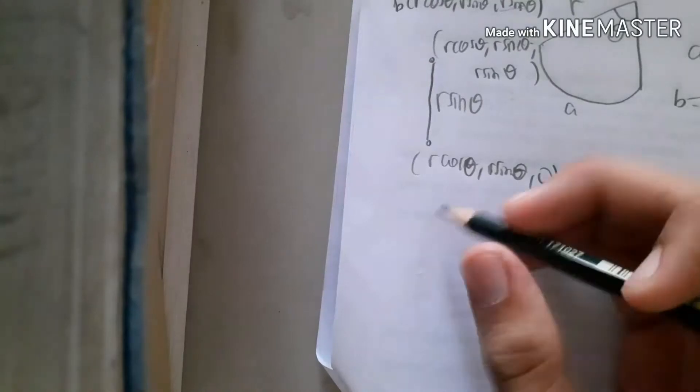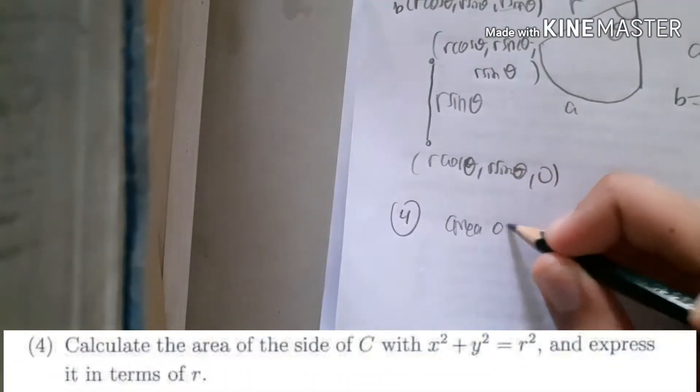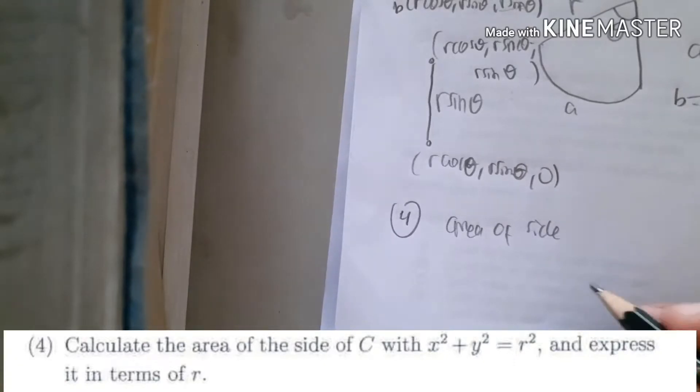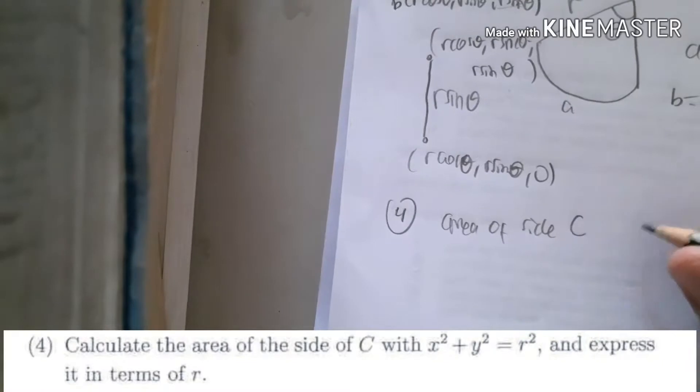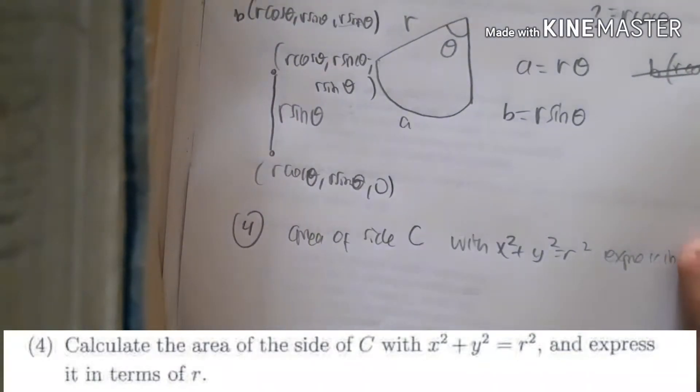Okay, so let's do number four. Number four says calculate the area of side C. Now this is a side. I apologize that I wrongly said 'the side' in number one. Number one is the section, now is a side. So area of side C from that cylinder and express in R. Okay, so yeah, we express in R here.